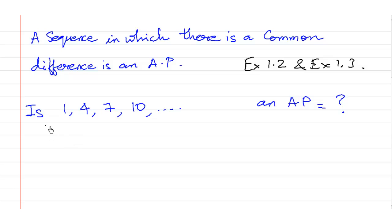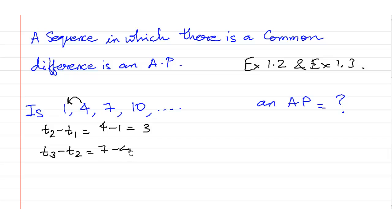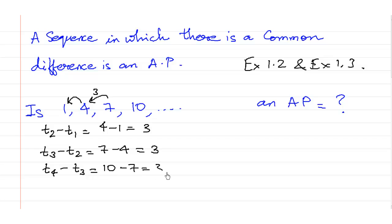If you take the second term and subtract the first term — 4 minus 1 — you get 3. Then if you take the third term minus the second term, 7 minus 4, you get 3 again. And the fourth term minus the third term, 10 minus 7, is again 3. Since there is a common difference of 3, we can say the common difference d is 3, and therefore the sequence is an AP.